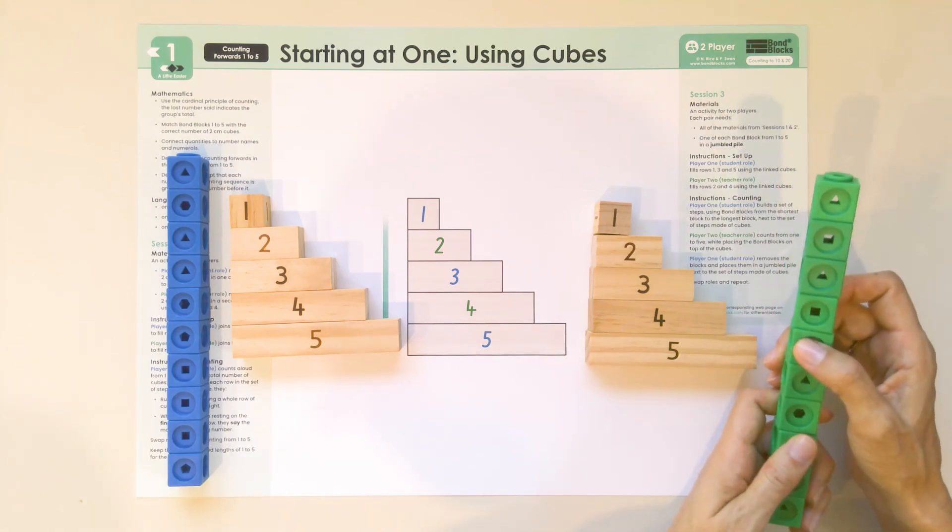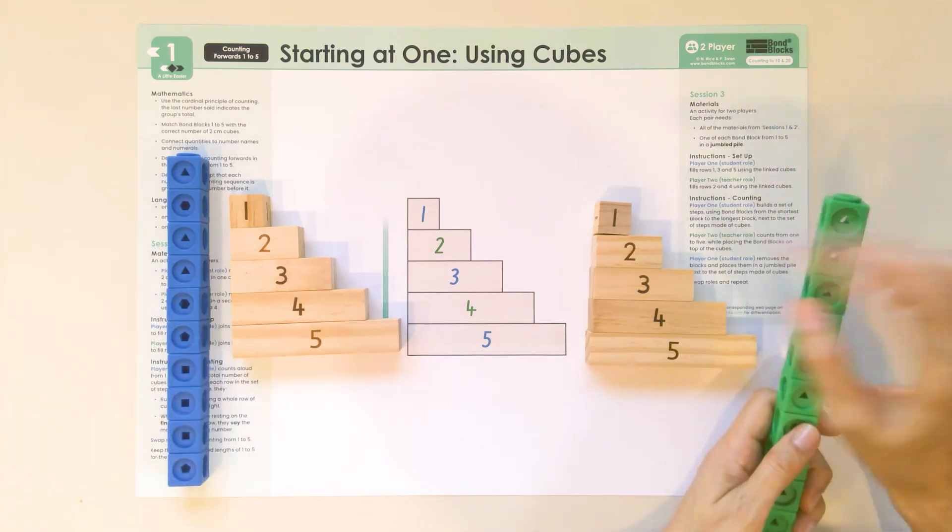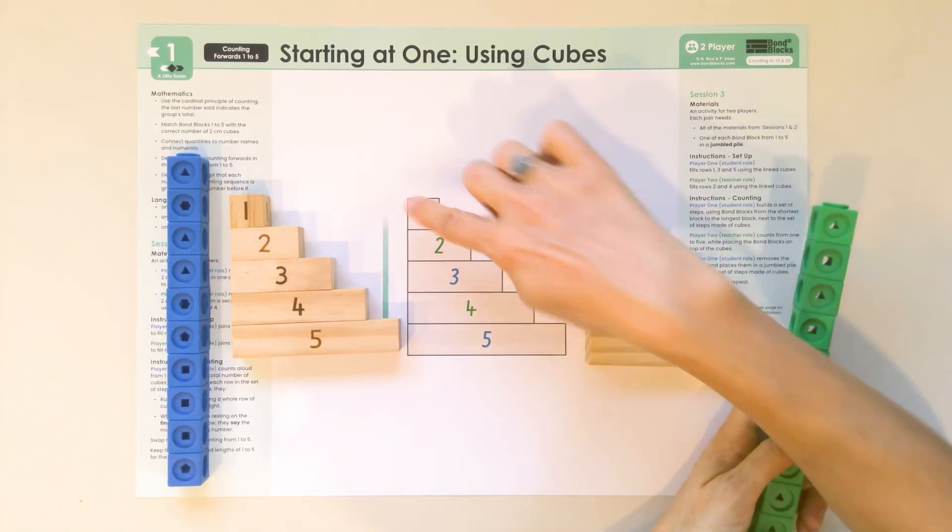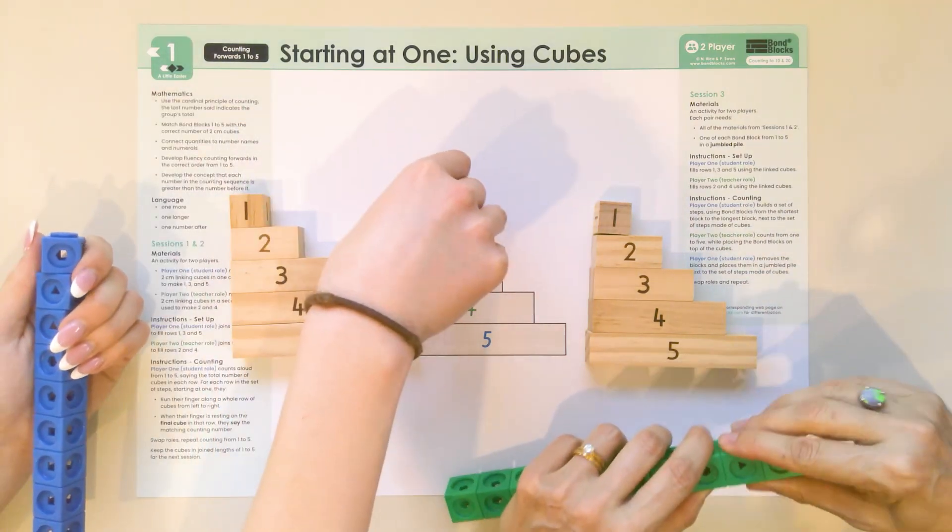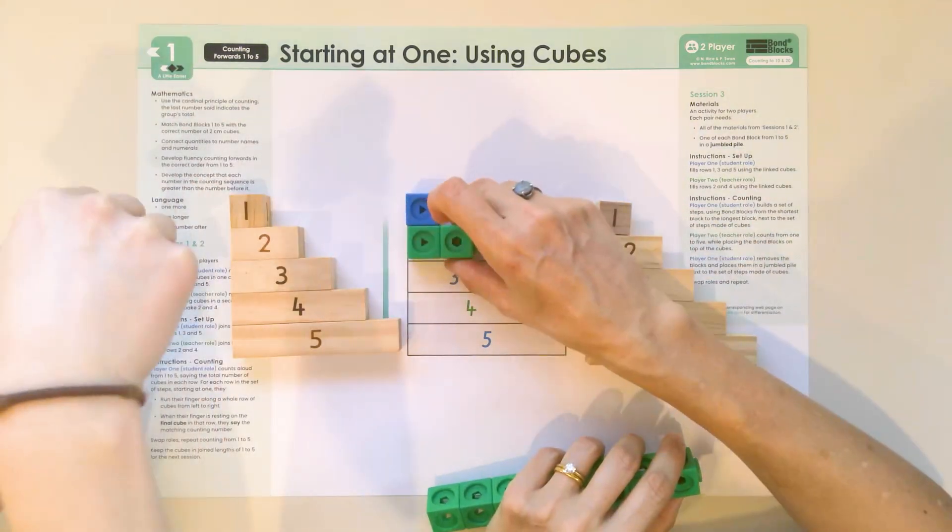Now, Karis, you're the blue player, do you want to say hi? Hi. Can you start and fill the first row with 1 cube? And we'll work together to fill the steps. Good.